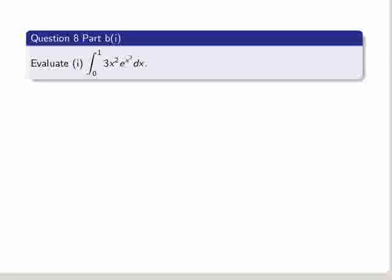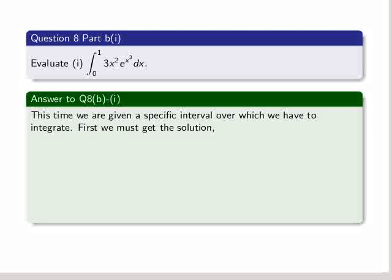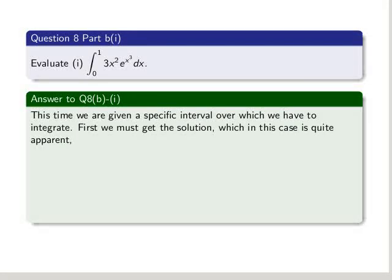So the first section of part b now: evaluate 3x squared times e to the power of x cubed, integrated over the interval 0 to 1. This time we are given a specific interval over which we have to integrate. First we must get the solution, which in this case is quite apparent.